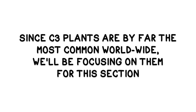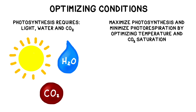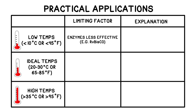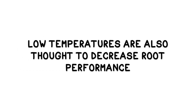Since C3 plants are the most common, we'll use these as an example, but the conditions can be tweaked to accommodate C4 or CAM plants. Assuming there is ample sunlight and water, the two major factors that control the rate of photosynthesis—i.e., how quickly the plant churns out carbon-rich compounds—are temperature and carbon dioxide saturation. At low temperatures, photosynthesis rate is limited by enzymes, which get too cold to function at full capacity. When the temperature drops, molecules move more slowly, reducing the likelihood of enzyme-substrate collisions. Low temperatures also limit a plant's ability to take up water and nutrients through its roots, even if the temperature never gets below freezing.